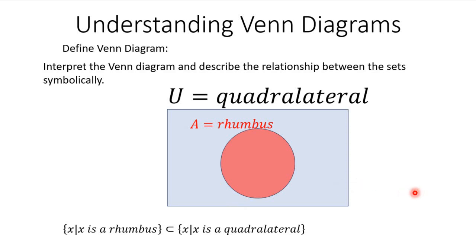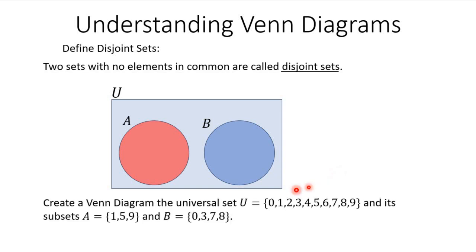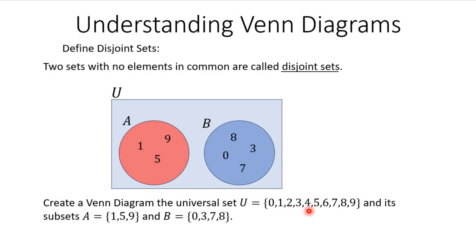Now let's look at another definition. Two sets with no elements in common are called disjoint sets — notice they don't overlap here, so there's no place to put any elements that would be in both sets. Let's create a Venn diagram for the universal set U and its two subsets. Subset A is {1, 5, 9} and subset B is {0, 3, 7, 8}. Notice that the numbers 2, 4, and 6 are not in either subset, so they go inside the universal set but outside both circles. This represents two disjoint sets that share no elements in common.